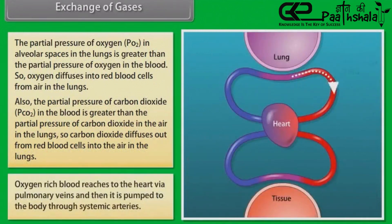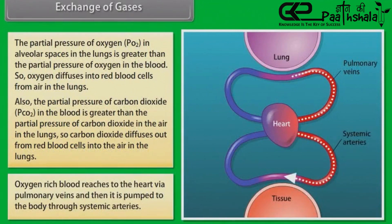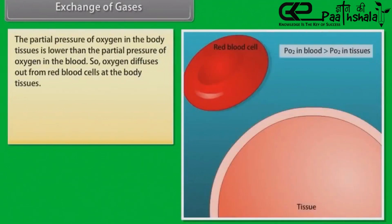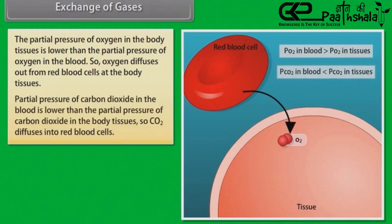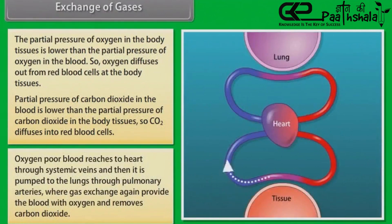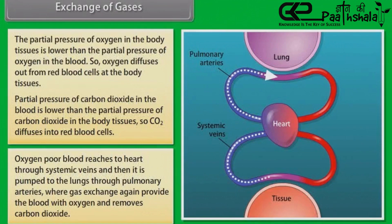Oxygen-rich blood reaches the heart via pulmonary veins and is then pumped to the body through systemic arteries. The partial pressure of oxygen in body tissues is lower than in the blood, so oxygen diffuses out from red blood cells at the body tissues. The partial pressure of carbon dioxide in the blood is lower than in body tissues, so CO2 diffuses into red blood cells. Oxygen-poor blood reaches the heart through systemic veins and is then pumped to the lungs through pulmonary arteries, where gas exchange again provides the blood with oxygen and removes carbon dioxide.